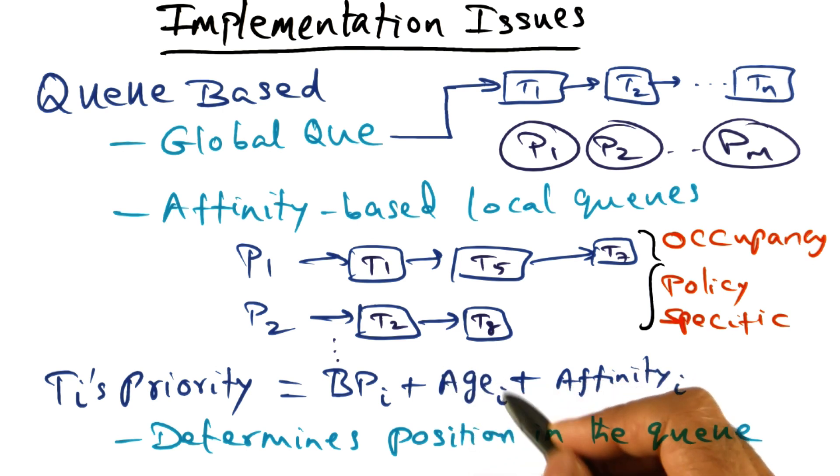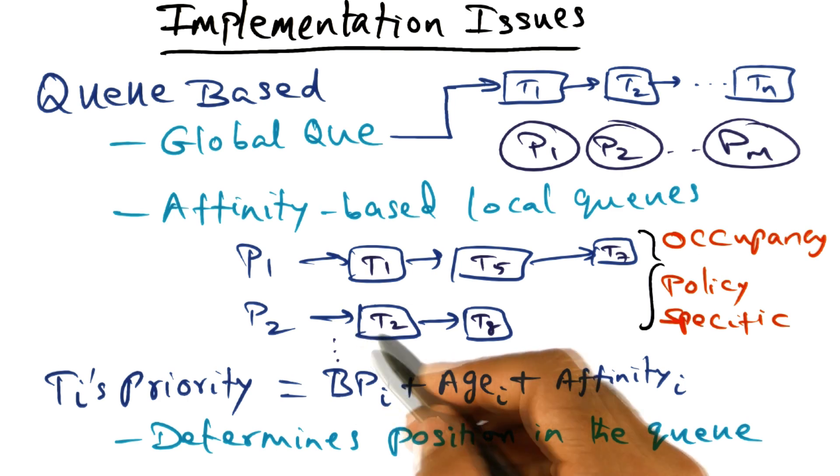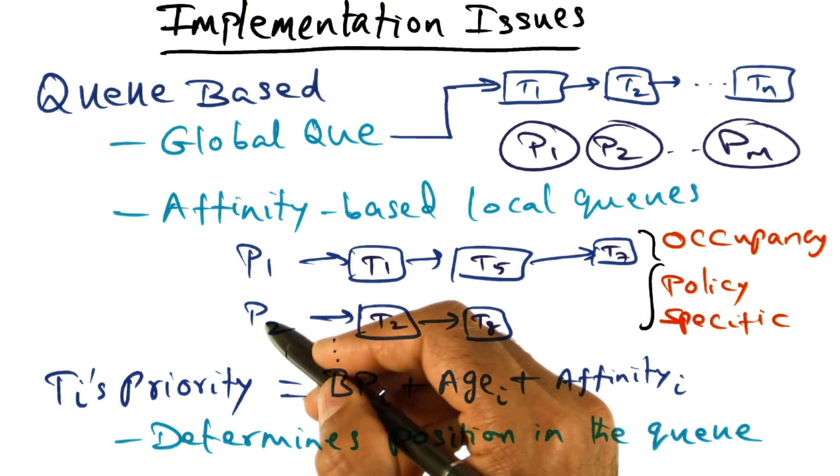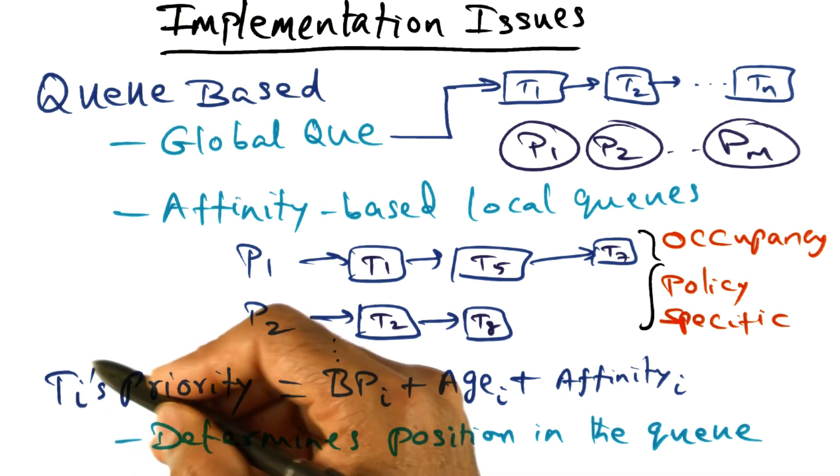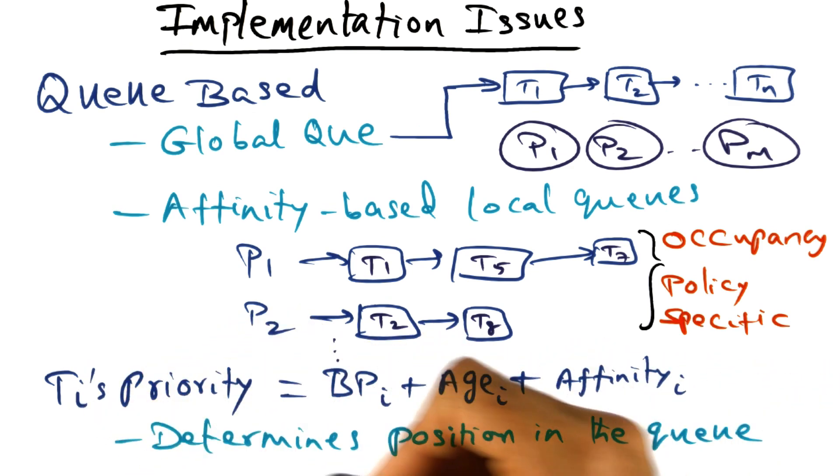So what you do is, equal to giving a senior citizen discount, you boost the priority of the thread by a certain amount so that it gets to be at the head of the queue and it'll get scheduled on the processor P2. So basically, the priority attribute is what determines the position in the queue for a particular thread.